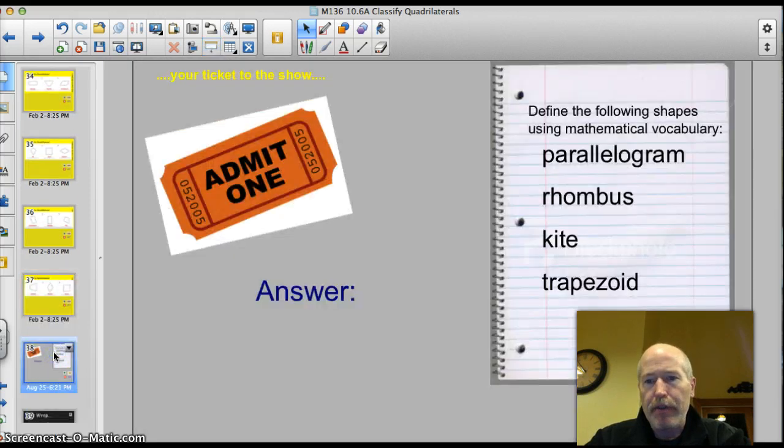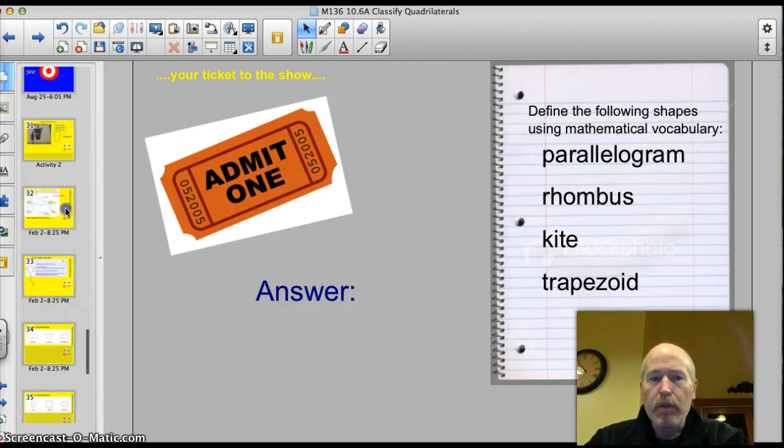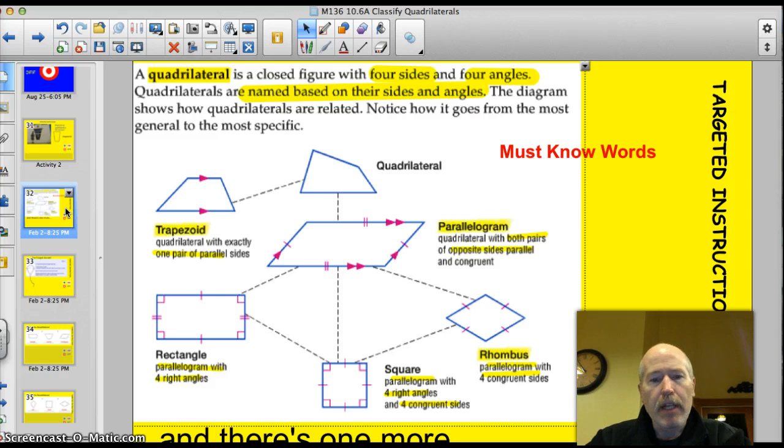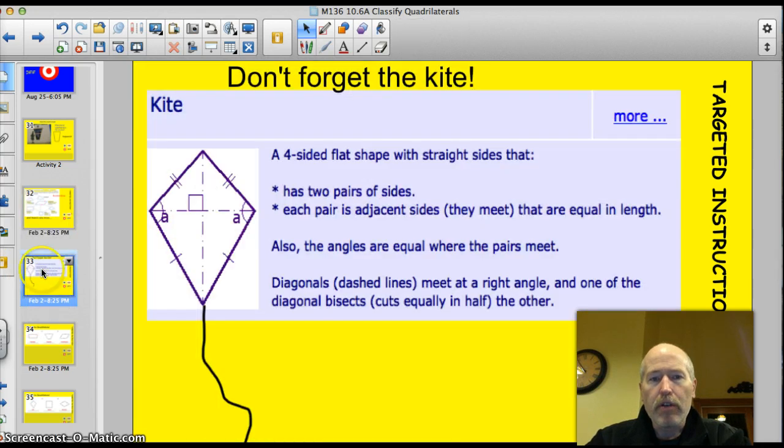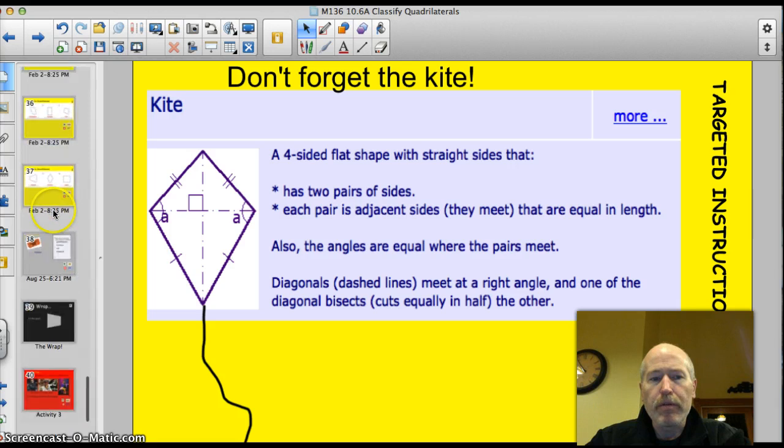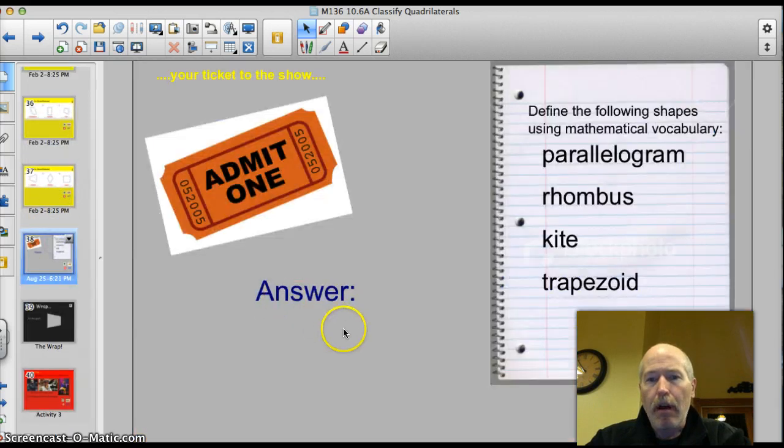Here's your ticket to the show. A little bit different ticket. I'm sorry, I'm going to make you work a little bit, but it was a short lesson. Please define these shapes using mathematical vocabulary: parallelogram, rhombus, kite, trapezoid. You might want to even go on back to this one here and take a look at it. I'll just freeze there for a minute so you can pause it. And then I'll freeze here. Try to use some of those words. Please.